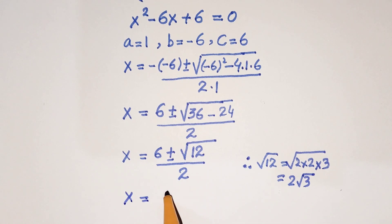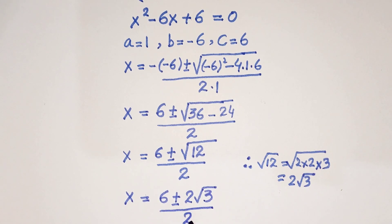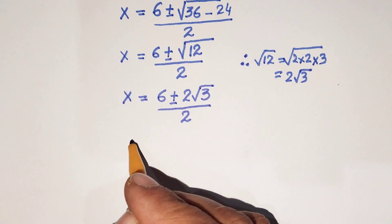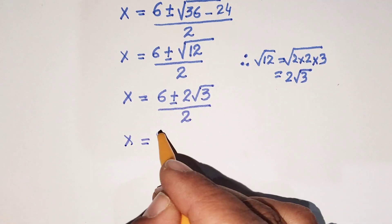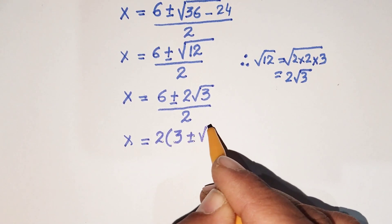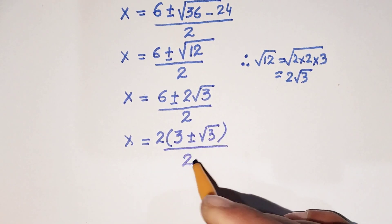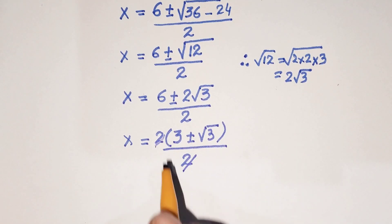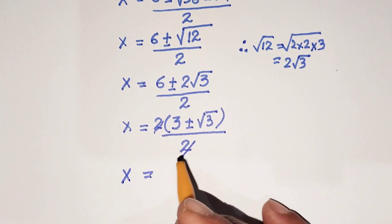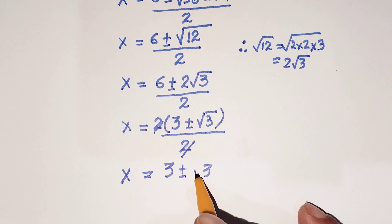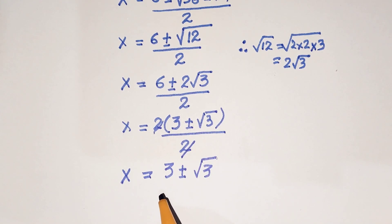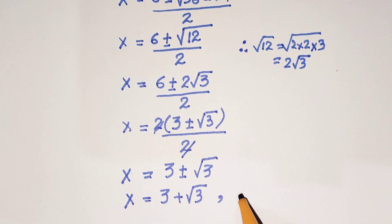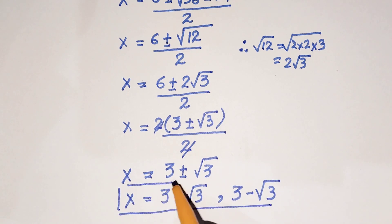So x equals (6 plus or minus 2 root 3) divided by 2. Taking 2 as common from the numerator, we get 2(3 plus or minus root 3) divided by 2. Cancelling 2 with 2, we get x equals 3 plus or minus root 3. So we have two values: x equals 3 plus root 3, and x equals 3 minus root 3.